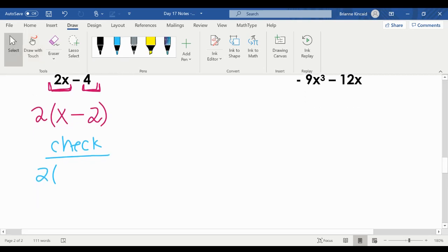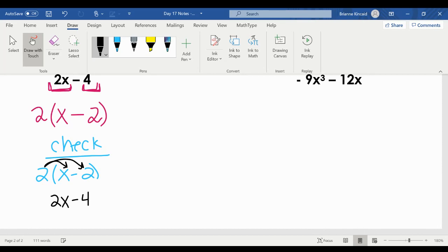So when I do my check, here's my answer: 2 times (x - 2). I go ahead and I distribute. So two times x is 2x. Two times negative two is negative four, which is what we started with. We're good. That's our final answer.